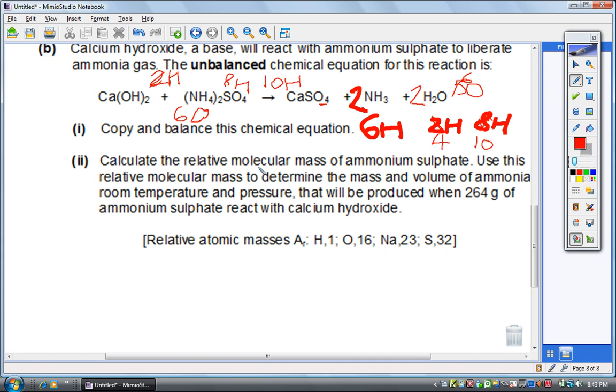Now oxygen is balanced with 6 oxygen. Let's check hydrogen now - hydrogen here has 8 and 2, so total you have 10 hydrogen which is balanced. So every single element is balanced: hydrogen, oxygen, nitrogen and calcium. The balanced equation is just an addition of 2 beside ammonia and 2 beside water. Next question: calculate the relative molecular mass of ammonium sulfate.